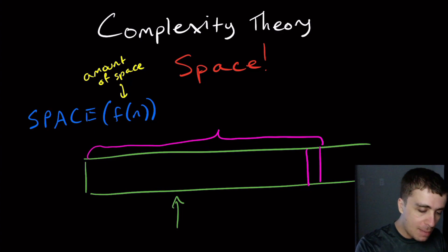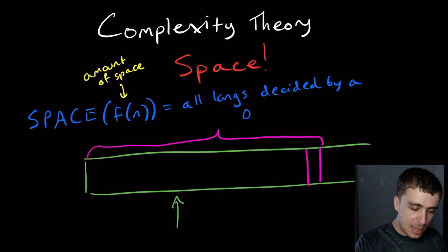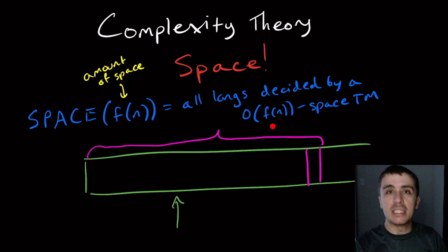So what is space f of n mean? What it means is that it's all languages decided by a big O of f of n space Turing machine. So what does this mean? This just means that for all inputs of size n, then the Turing machine runs in at most f of n space. No matter what the input is, if it takes at most f of n times a constant amount of space, then we say it's big O of f of n space Turing machine. And space of f of n is just all languages decided by such a Turing machine.